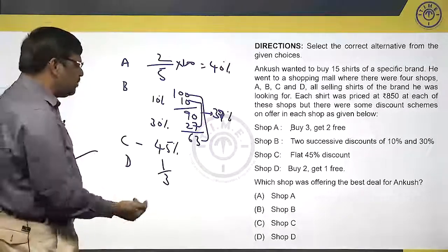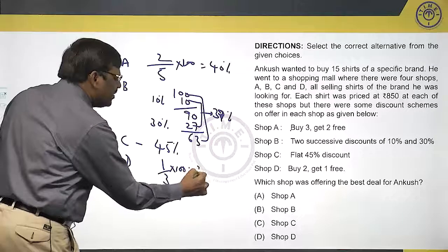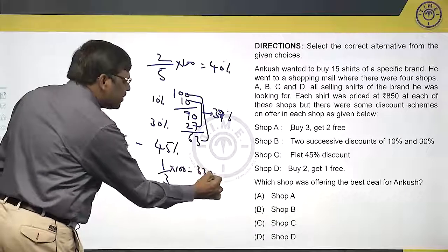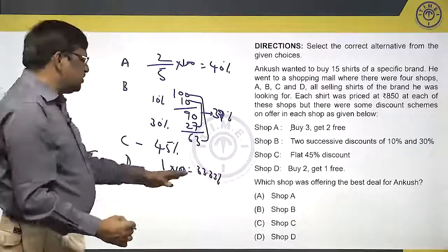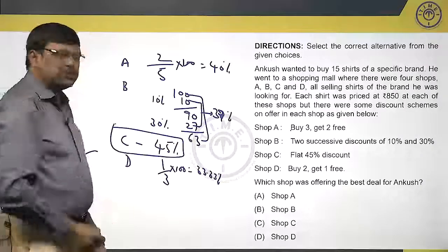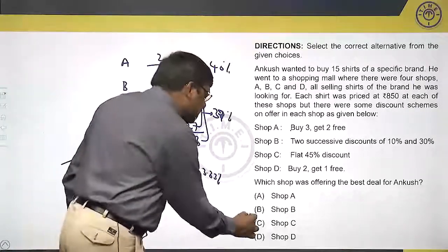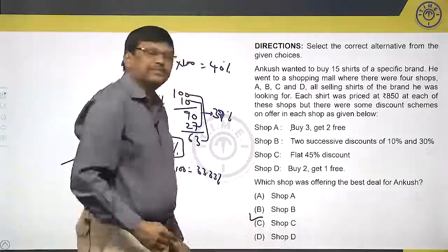Let us look at D. Buy 2 and get 1 free means if he buys 3, out of them 1 he does not have to pay. That means he is getting 1 free out of the total 3. If I am buying 3 shirts, out of them 1 free and 2 he has to pay. So that means 1 by 3, 1 by 3 is what percent? 33.3%. Hence Shop D is giving 33.3%.